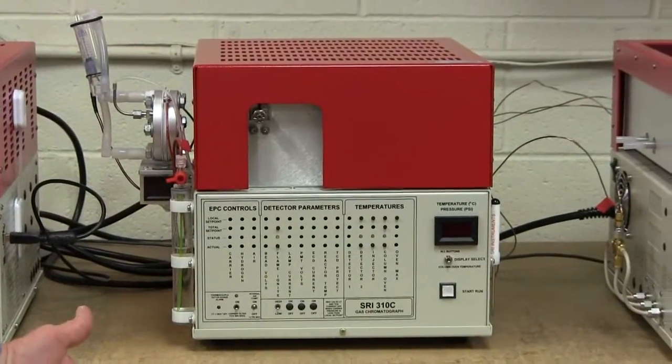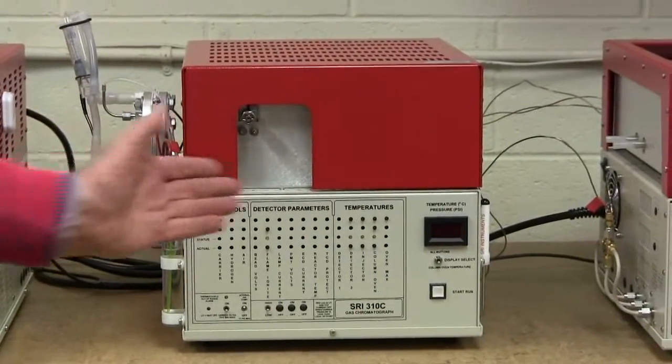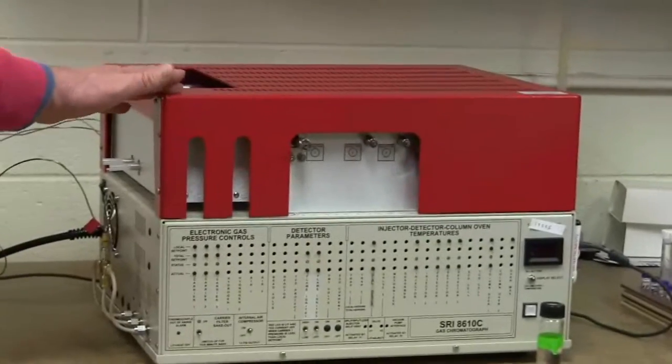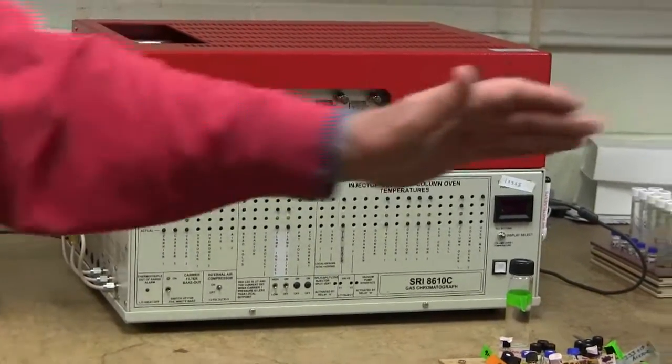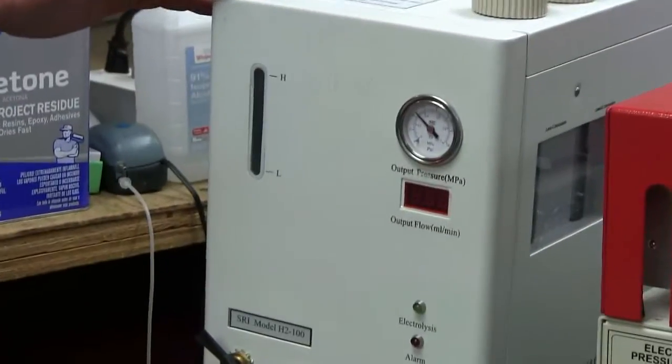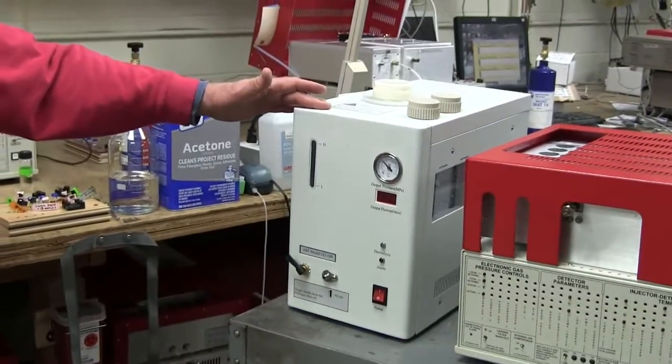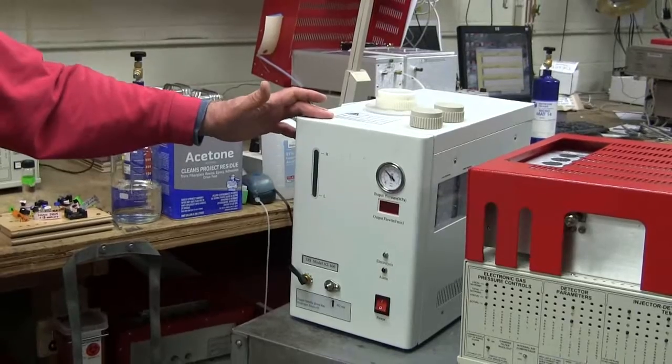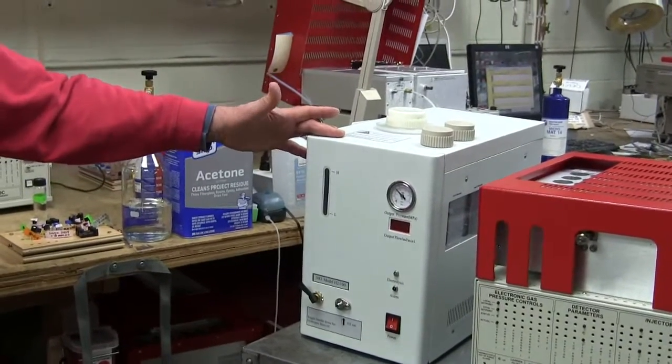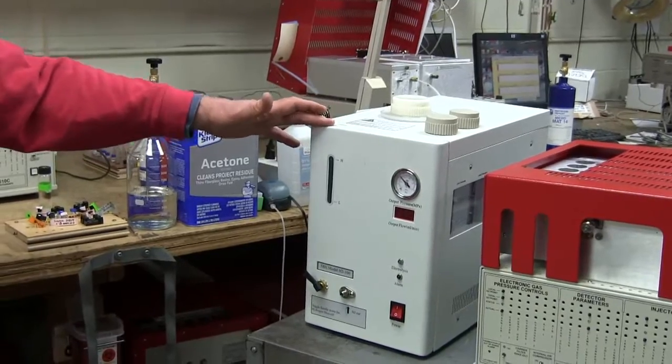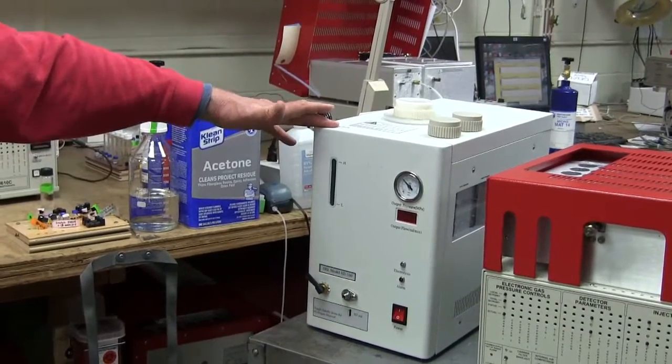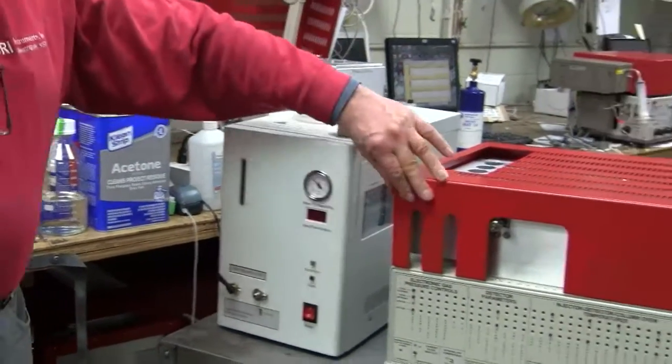Then we have our professional model GC. The professional model is the 8610, and it can be equipped with a hydrogen generator if you like. We have a $3,000 hydrogen generator that can run for a month on a gallon of distilled water, and this is a good choice for a professional laboratory where the GC is going to be in use more or less constantly.